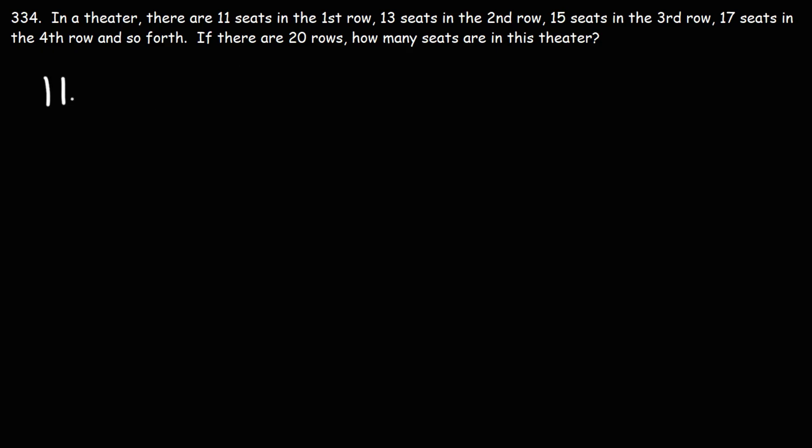So in the first row we have 11, the second row has 13, the third row has 15, and the fourth row has 17. What we have is an arithmetic sequence. We can see that the numbers are increasing by 2 every row, so the common difference is 2.